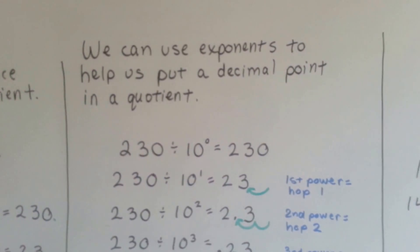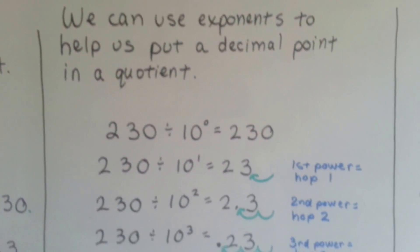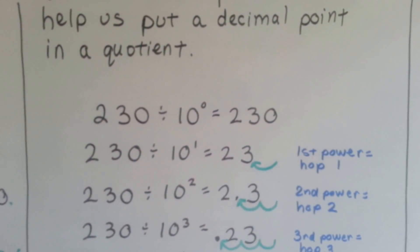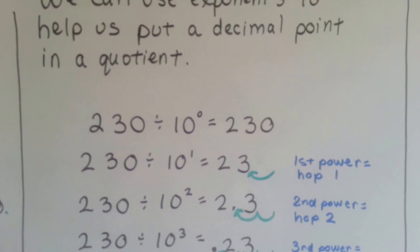We can use exponents to help us put a decimal point in a quotient. 230 divided by 10 to the 0 power is 230, because 10 to the 0 power is 1, right?